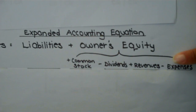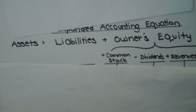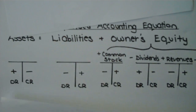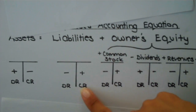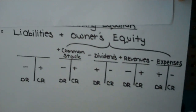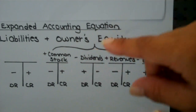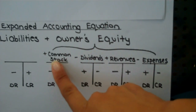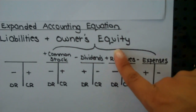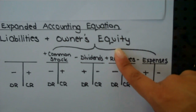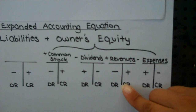Let's go ahead and add t-accounts for these new four subcategories. We already know the normal balances for assets and liabilities to be debit and credit. Let's look at our t-accounts under the owner's equity section. Since both common stock and revenues increase owner's equity, they will have the same normal balance as owner's equity, which was a credit normal balance, meaning that all entries on the right-hand side will increase these accounts.